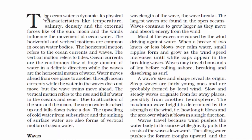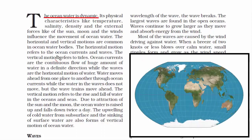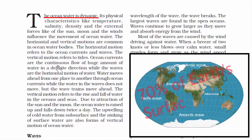Ocean water is never still — it keeps moving. If you look at the world map, all five oceans run into each other, meaning they are interconnected. For educational purposes, we have named them Pacific, Atlantic, Indian, Arctic and Antarctic Ocean. Otherwise, Earth's oceans are all connected to one another, and together they form 70% of Earth's surface.